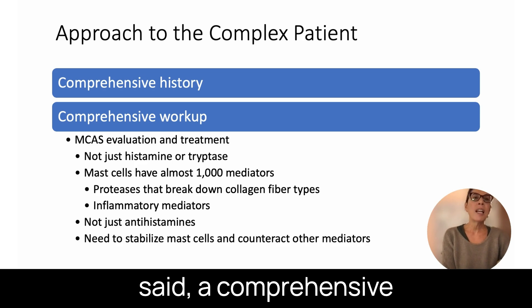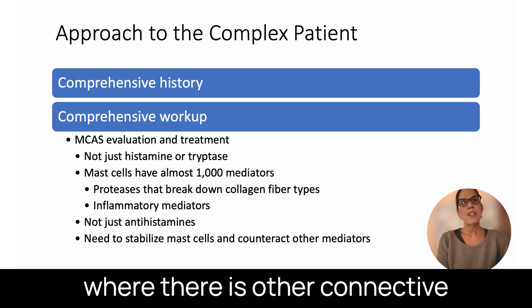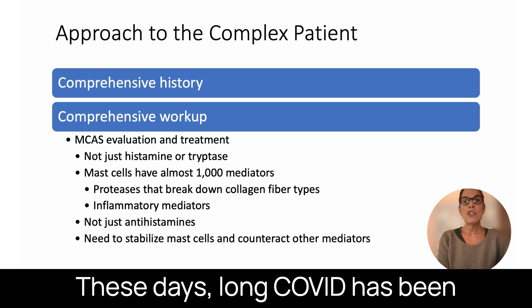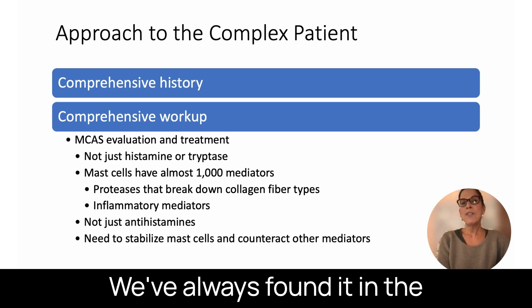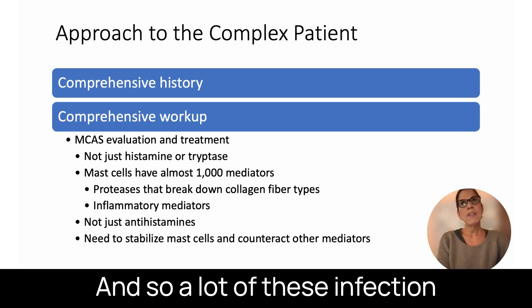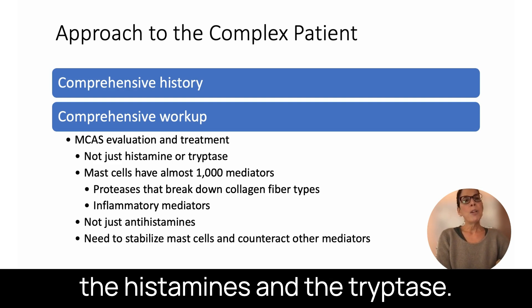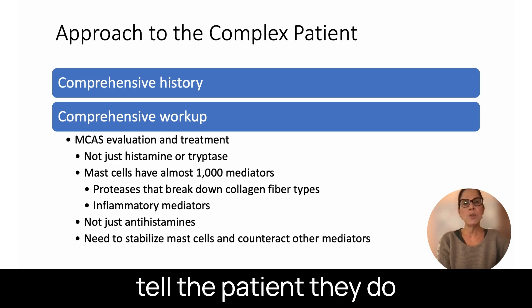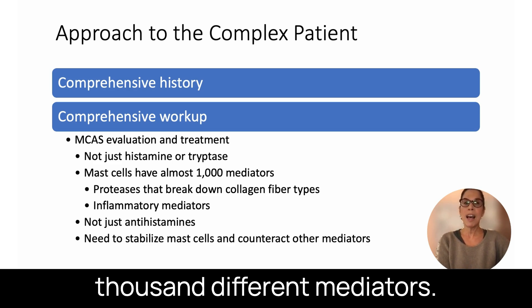The approach to the complex patient starts with a comprehensive history — identifying where there are other connective tissue problems or where there has been chronic inflammatory exposure. Long COVID has been on the forefront, and we're finding a lot of connective tissue compromise in that population, as we've always found in ME-CFS. The workup includes a real and important mast cell activation syndrome evaluation and treatment — and it's not just about the histamine and the tryptase. A lot of institutions will say that if tryptase is normal, the patient does not have a mast cell issue, but that is not true at all.